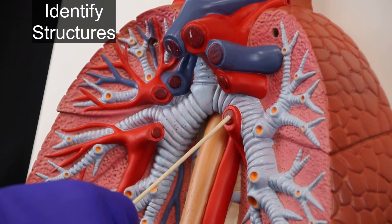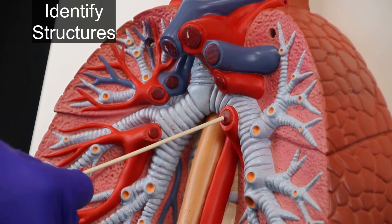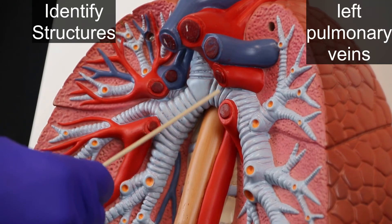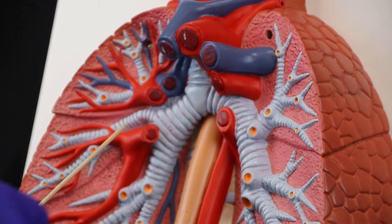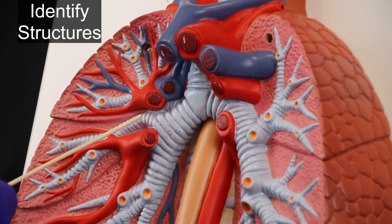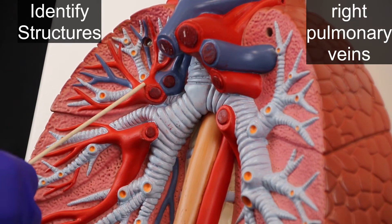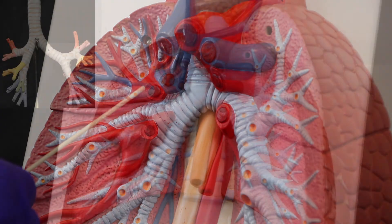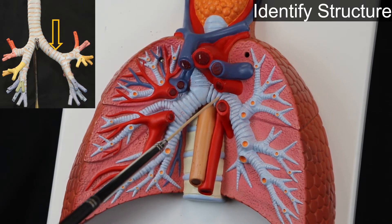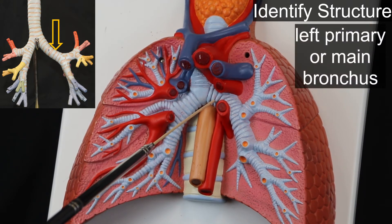ID. Structures: left pulmonary veins. ID. Structures: right pulmonary veins.